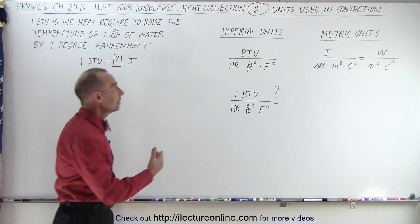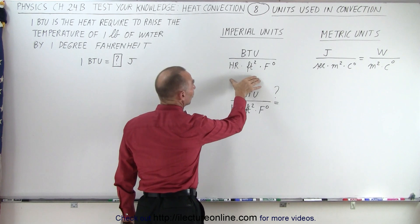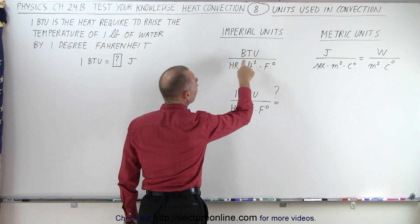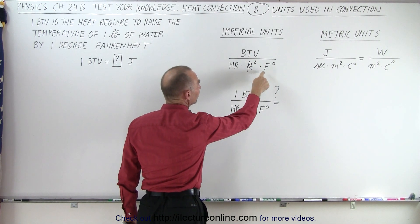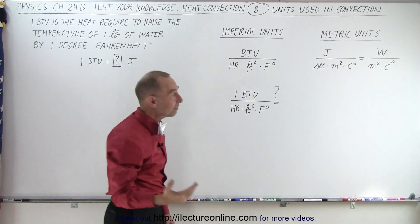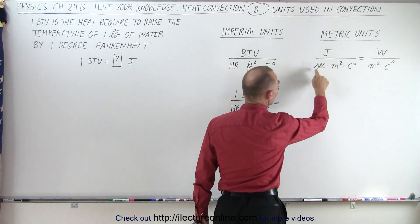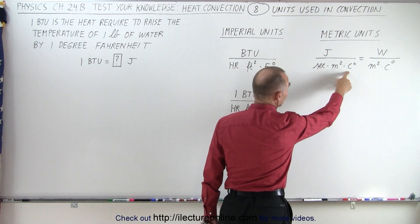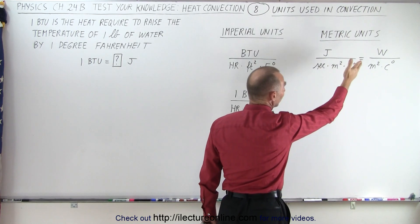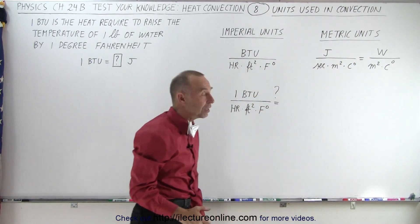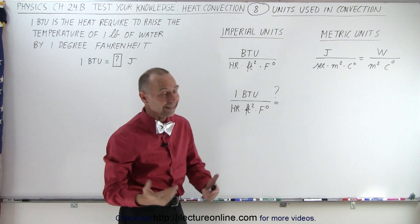So in imperial units, the transfer coefficients are in terms of BTUs per hour per square feet per Fahrenheit degrees, where in metric units it's joules per second per square meters per centigrade degrees, which is converted to watts per square meter per centigrade degrees because a joule per second is indeed a watt.